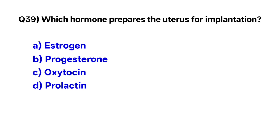Question number thirty-nine: Which hormone prepares the uterus for implantation? The correct option is B, progesterone.